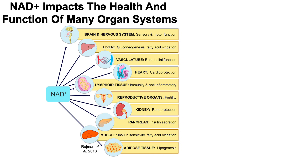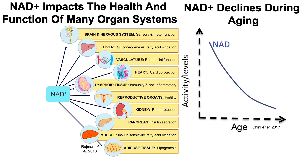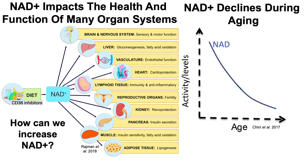NAD impacts the health and function of many organ systems, but it declines during aging. So how can we increase NAD? One strategy involves diet, and more specifically, by including foods that contain CD38 inhibitors.